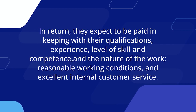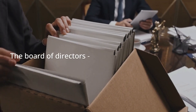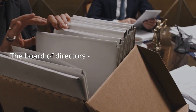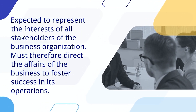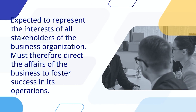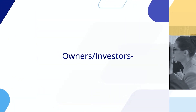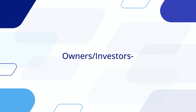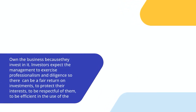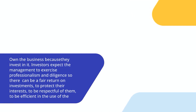Number three: the board of directors and owners. These are persons who are expected to represent the interests of all stakeholders of the business organization. Owners and investors are the persons who own the business because they invest in it. Investors expect management to exercise professionalism and diligence so there can be a fair return on investment, to protect their interests, to be respectful of them, to be efficient in the use of the organization's resources, and to keep them informed about happenings of the business organization.